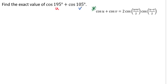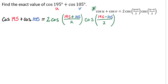So let's rewrite that. We have 2 times the cosine of 195 plus 105 divided by 2, times the cosine of 195 minus 105 divided by 2. And now we're going to do the math inside of our parentheses, which is going to give us 2 times the cosine of 150 times the cosine of 45.